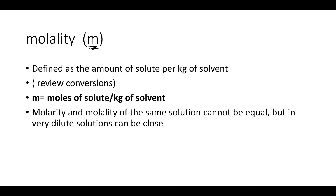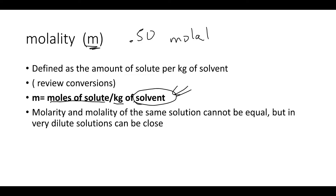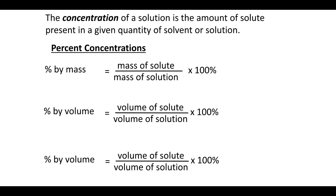Molality is a lowercase m and a solution is described as 'molal.' A 0.5 molal solution has 0.5 moles of solute per kilogram of solvent. This is the only unit where the denominator is just the solvent — not total moles or total volume.